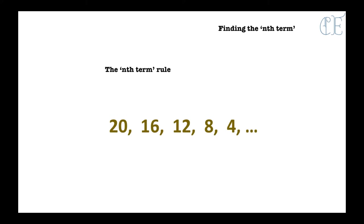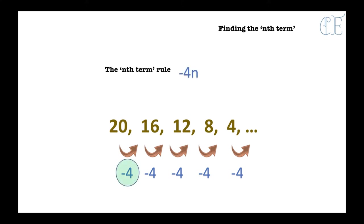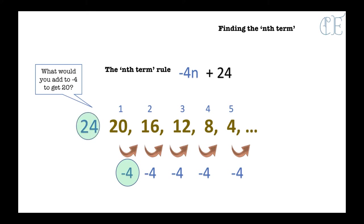Let's try and find the nth term for this one. Here we can see that we go down, minusing 4 every time. So our term to term rule is minus 4, which means it starts with minus 4n. We then have to work out how we get from minus 4 to 20. Well, minus 4 plus 24 makes 20 — we need to get from the minus side up to 20, which means we need to add 24. So that's your nth term rule. You can also write it as 24 minus 4n.